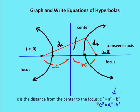When we had an ellipse, we used the formula c² = a² − b², where c was the distance from the center to the foci, a was the distance from the center to the vertices, and b was the distance from the center to the co-vertices. For a hyperbola, the formula changes to c² = a² + b². There are no co-vertices in a hyperbola. The b value now just helps us define the asymptotes. The a value is still the distance from the center to the vertices, and c is the distance from the center to the foci along the transverse axis.